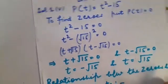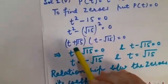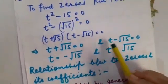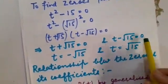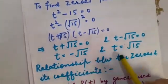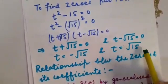Because I am going to calculate the zeros so I am going to put both the expressions equal to 0. t plus root 15 is equal to 0 and t minus root 15 is also equal to 0. From here I have got t is equal to minus root 15 and here I have got t is equal to root 15.